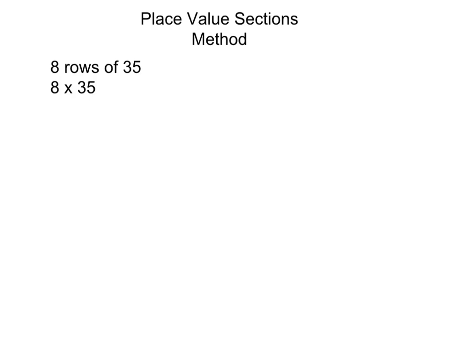So let's review a method called the place value sections method. It's called that because we're going to break down the factors into their place value components to help us do the multiplication. The way we're going to do that is using an area model, so we're going to get to do a little bit of drawing.